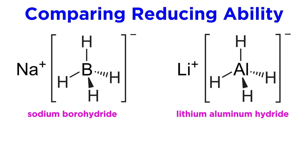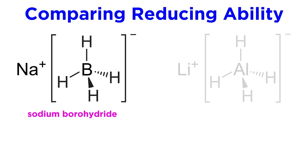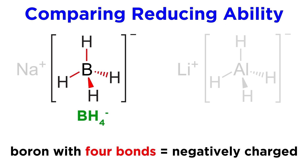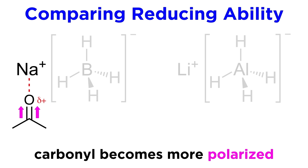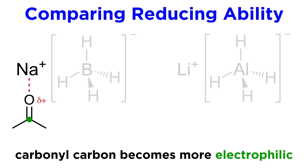To understand the discrepancy in reducing ability, let's look at the structure of these reagents. For sodium borohydride, we have the borohydride, which is BH4-, so the boron atom has a formal negative charge, because it has only 3 valence electrons but is contributing 4 to this structure. Then there is the sodium counterion, which will coordinate to the carbonyl oxygen, giving it a slight partial positive charge, which withdraws some of the electron density in this double bond towards the oxygen, which increases the electrophilicity of the carbonyl carbon.